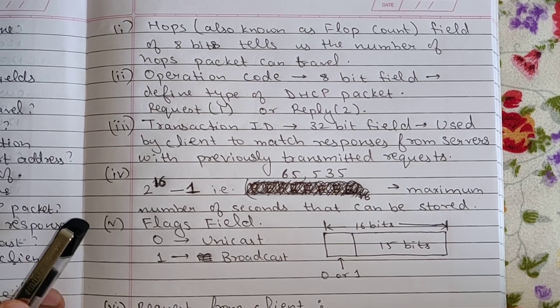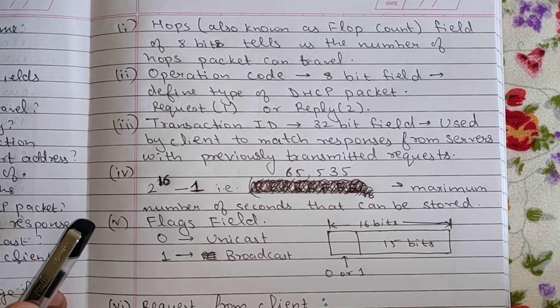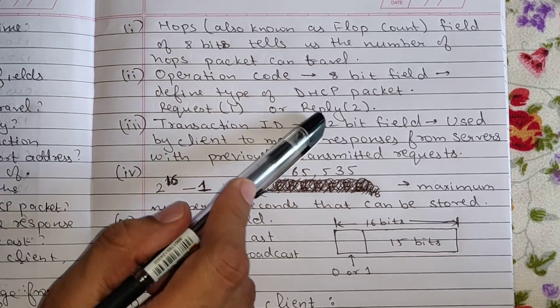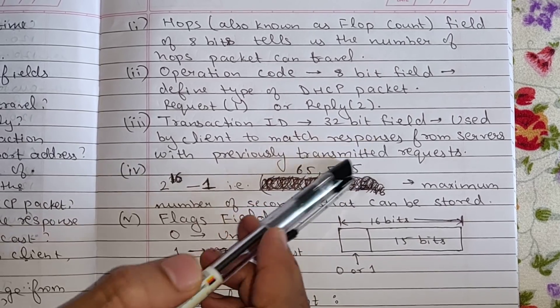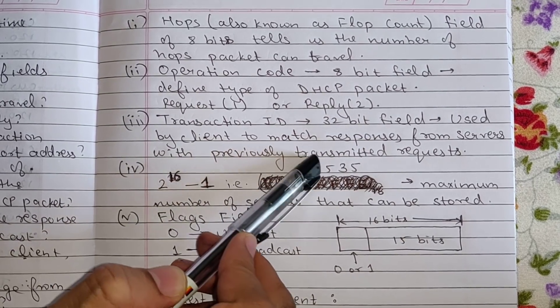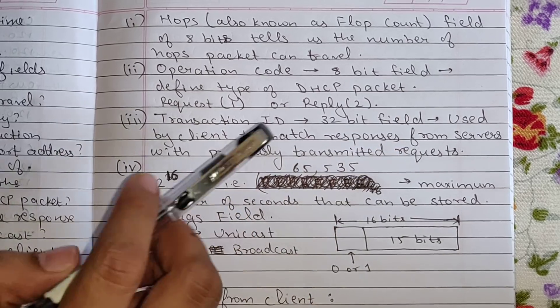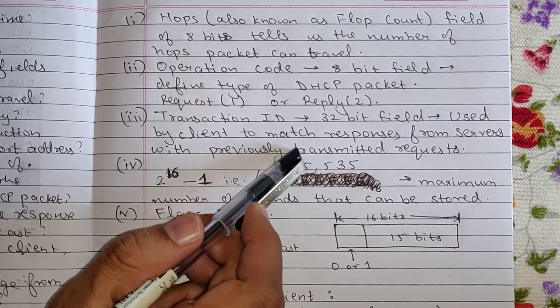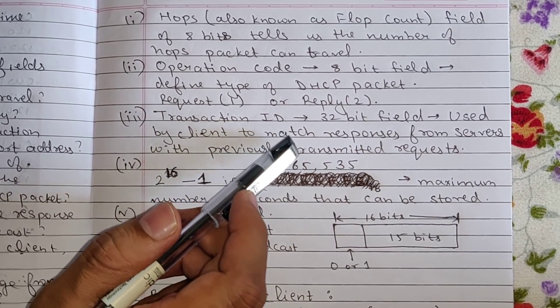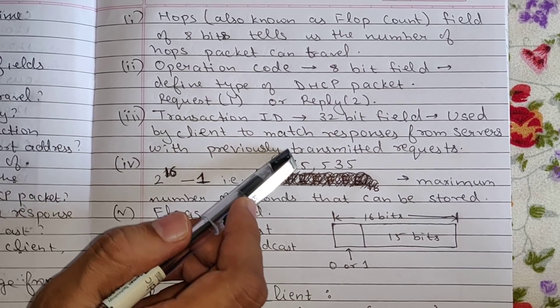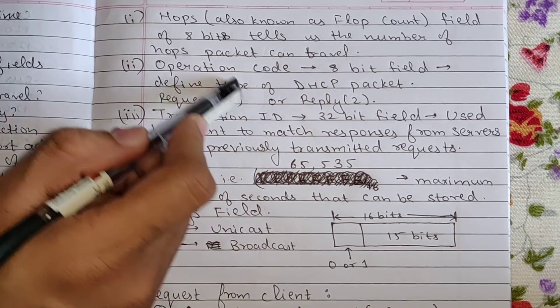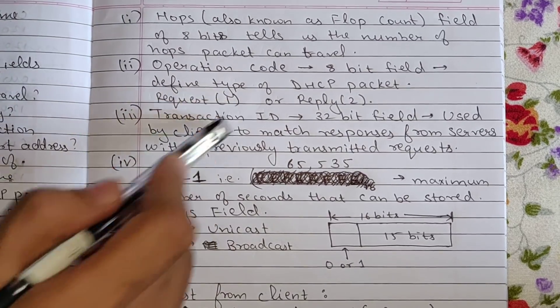Then next question, why there is a need of transaction ID. Well, transaction ID, it is again a 32 bit field and it is used by client to match responses from servers with previously transmitted requests. What I mean by this is basically it is used to match a reply with the request.